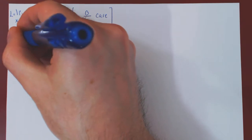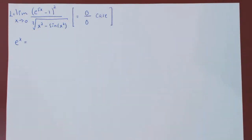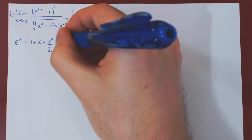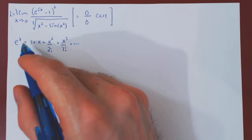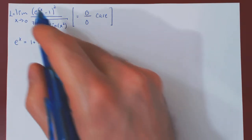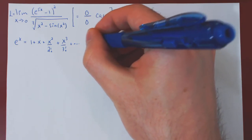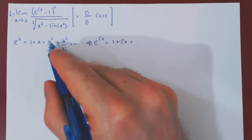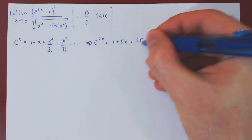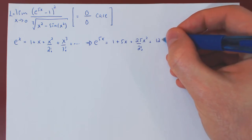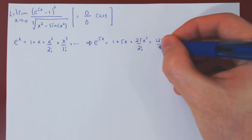Recall that the Maclaurin series for e to the x is as follows — in expanded form: e to the x equals 1 plus x plus x squared over 2 factorial plus x cubed over 3 factorial and so forth. This equality is valid for all values of x, so we can replace x by anything we want. Since we're considering e to the 5x, we replace x by 5x, giving us: e to the 5x equals 1 plus 5x plus 25x squared over 2 factorial plus 125x cubed over 3 factorial and so forth.